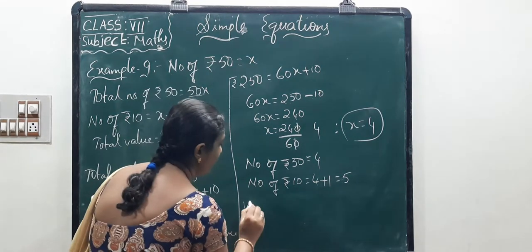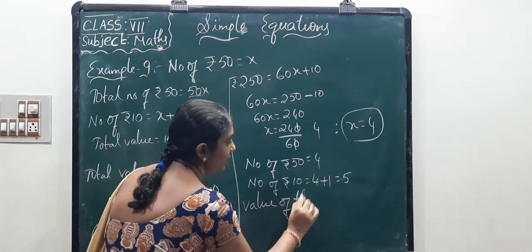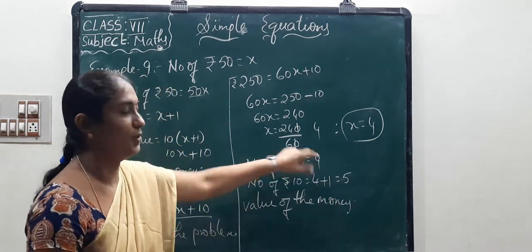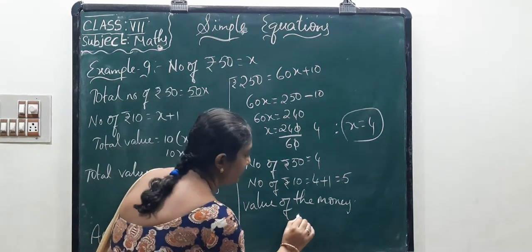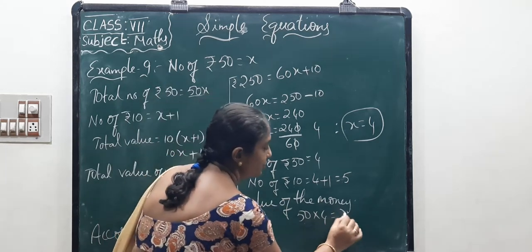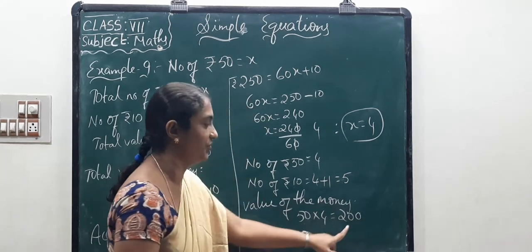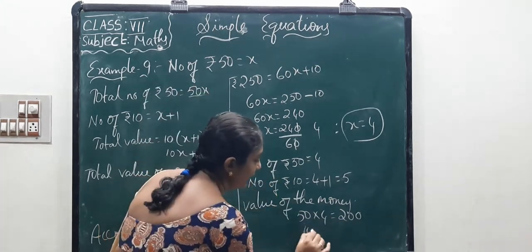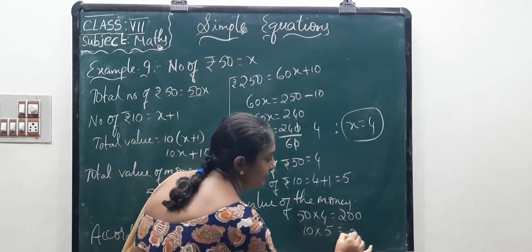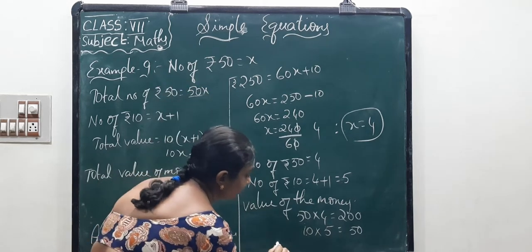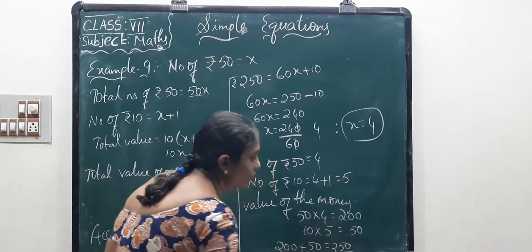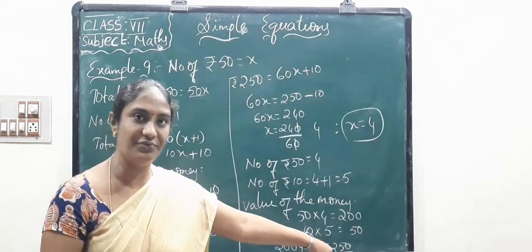Now let us verify the value of money. We have 4 fifty-rupee notes: 50 into 4 equals 200 rupees. We have 5 ten-rupee notes: 10 into 5 equals 50 rupees. Adding: 200 plus 50 equals 250 rupees. So total amount in the purse is 250 rupees — which matches the problem.